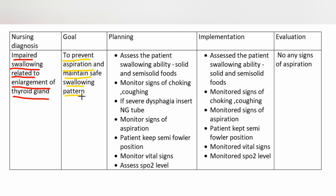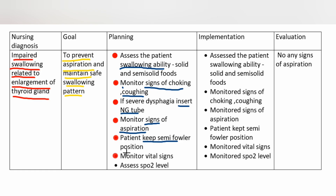Planning: Assess the patient's swallowing ability with solid and semi-solid foods. Monitor signs of choking and coughing. If severe dysphagia, insert an NG tube. Monitor signs of aspiration. Keep the patient in a semi-Fowler's position. Monitor vital signs. Assess and monitor oxygen saturation level.